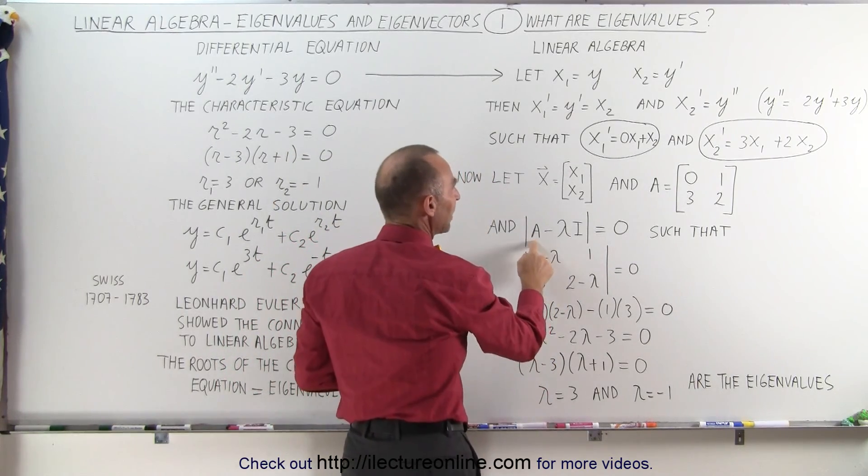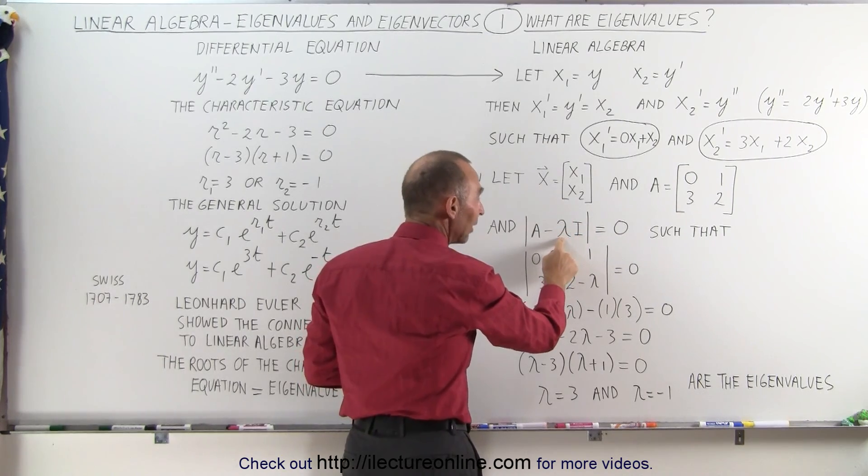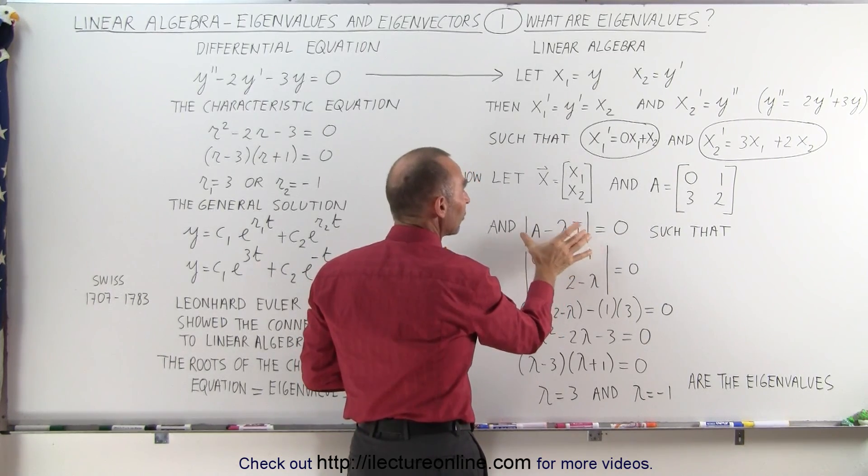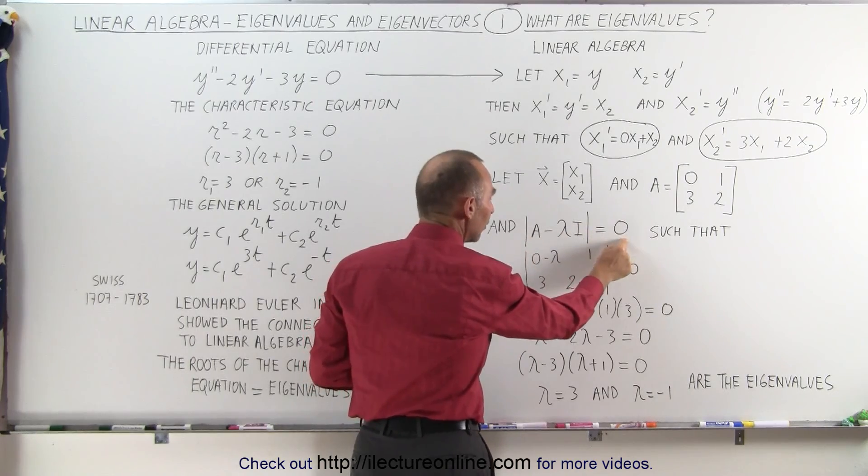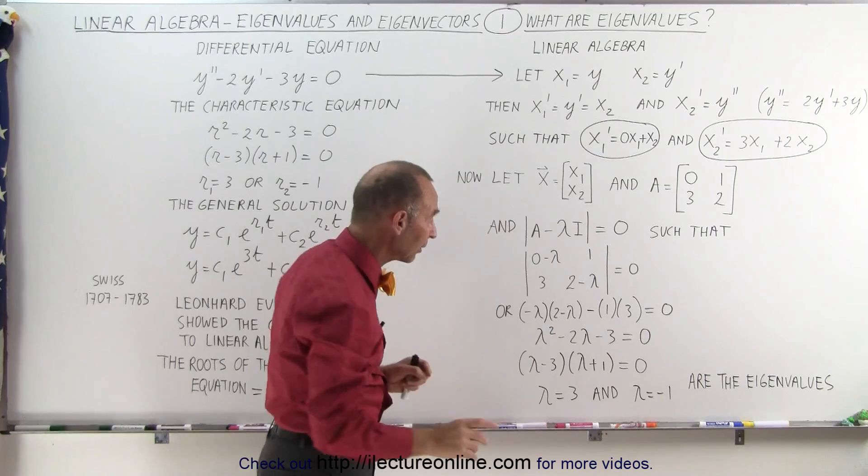If we then take that matrix A, subtract from that some arbitrary constant we call that eigenvalue, and set that determinant of that equal to zero, and we solve for lambda—here that again, this eigenvalue.